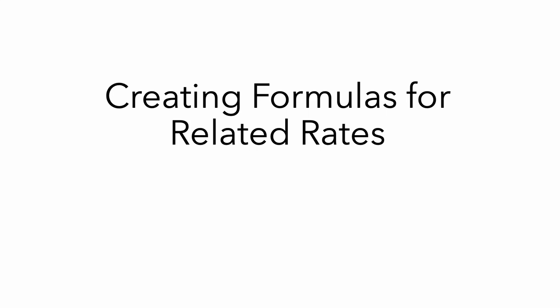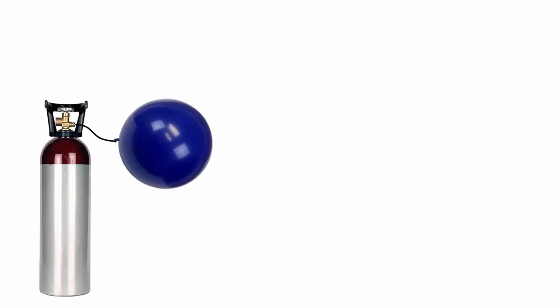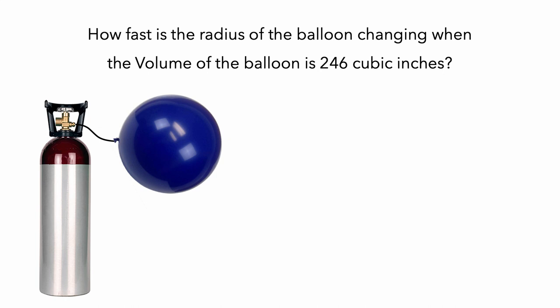In this video, I'll describe how to create formulas to solve related rate problems. Here is a spherical balloon that is being filled with helium at a constant rate of 90 cubic inches per second. We'd like to know how fast the radius of the balloon is changing when its volume is 246 cubic inches.